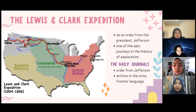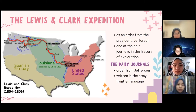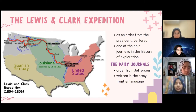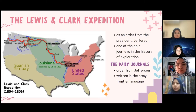The idea of the origin of American English came from the Lewis and Clark expedition. This expedition took place as an order from the president at the time, Jefferson, to explore the Louisiana territory as it was acquired by the U.S. in 1803. As you can see in the map, the Louisiana territory is shown in green, and the expedition took place from St. Louis to the west coast and back, from 1804 to 1806. It was marked as one of the epic journeys in the history of exploration.